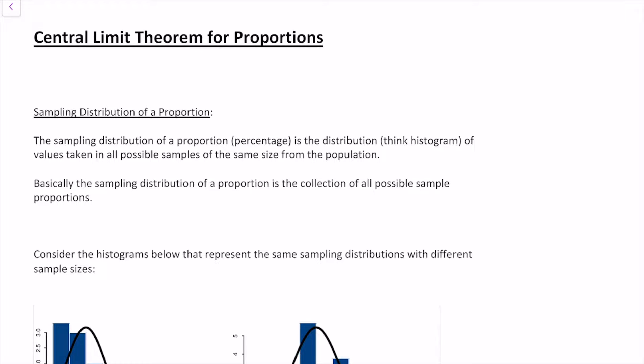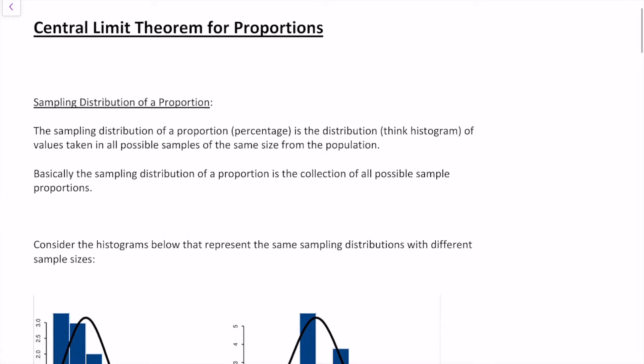In this video we're going to talk about the central limit theorem for proportions. First of all, what's a proportion? A proportion is just a fancy way of saying a percentage of something. But before we get into the central limit theorem, we have to talk about what a sampling distribution is — specifically the sampling distribution of a proportion.